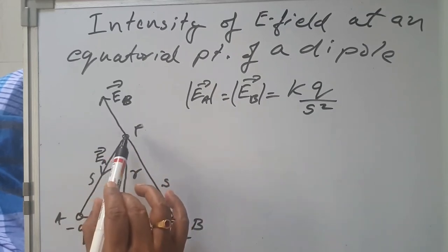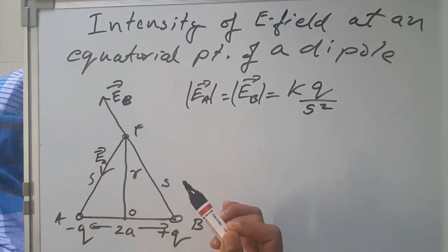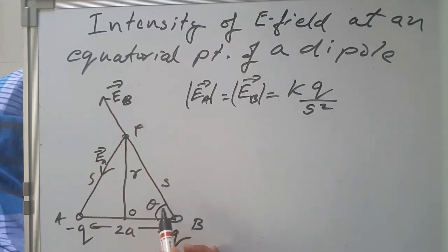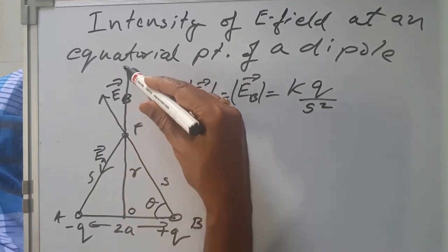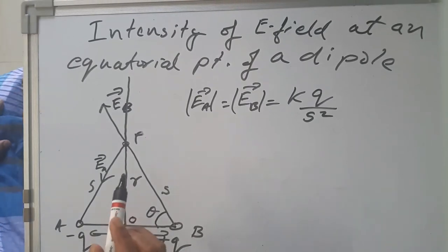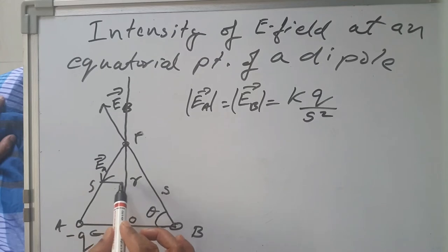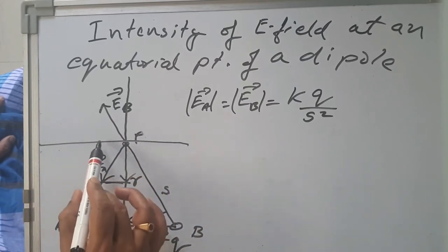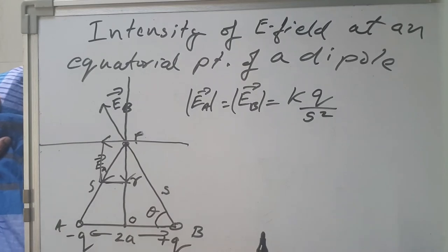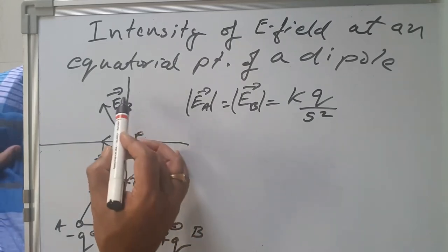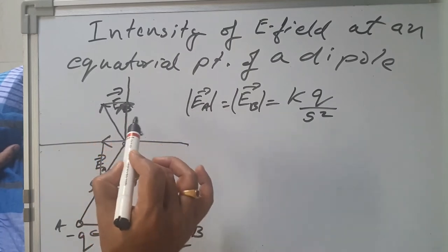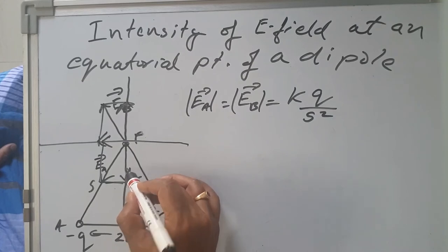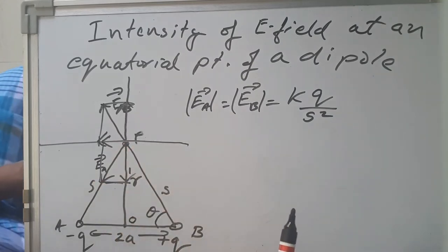Now we want to find the vector sum of EA and EB. For that, we are going to resolve EA and EB into two components each — vertical and horizontal. Suppose this angle is theta. EA can be resolved into a vertical component downwards and a horizontal component. Similarly, EB can be split into vertical and horizontal components. The vertical components of EA and EB are equal in magnitude but opposite in direction and will cancel each other.